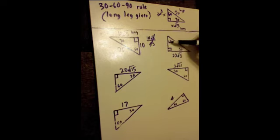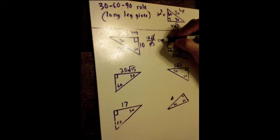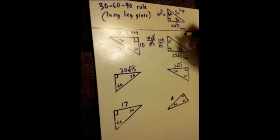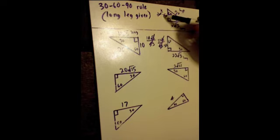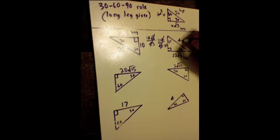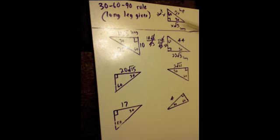Second problem, same idea. Here's the 60-degree angle; across from it is my long side. When you're given the long side first, you want to get the short side. So it's 22√3 divided by √3. The square roots cancel, and the short side is 22. We know you multiply the short side by 2 to get the hypotenuse: 22 times 2 is 44. It's very nice when the long side is a number with √3 at the end — all you do is divide by √3 to get the short side.